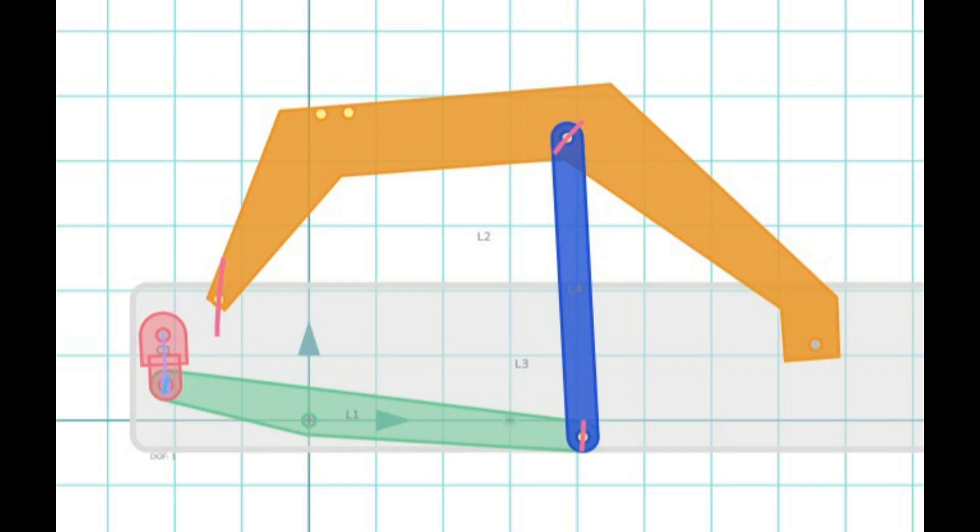Here we are in the MotionGen program. I have the marble escapement linkage drawn up, and this is the design that I actually built as a working model. If you remember from the example, the swinging arm pivots on the right side, and on the left side is the tip that comes down and separates the marbles.